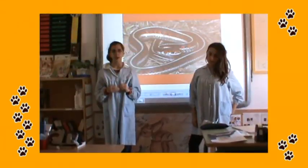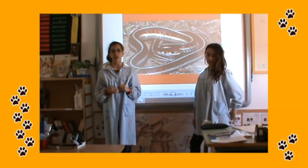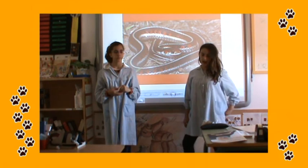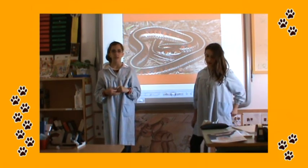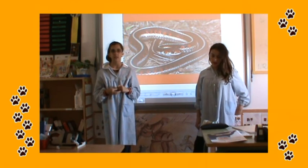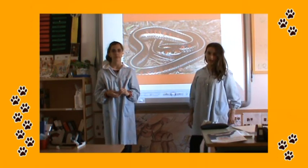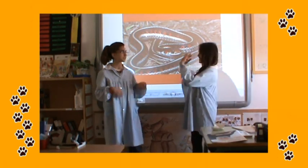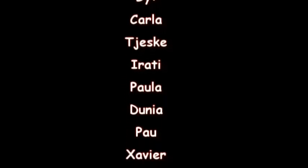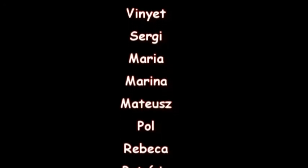This animal is a reptile. It is black, white, red and orange. Her tongue is red and white. It has got wings. It doesn't fly, but it drowns. It lives on land. This animal is a predator. It eats frogs and more animals. It's a snake.